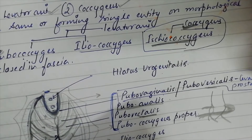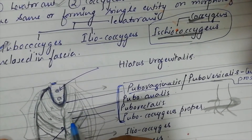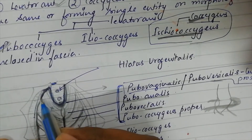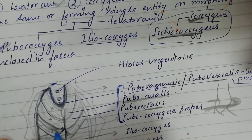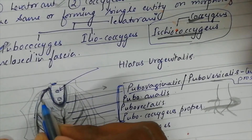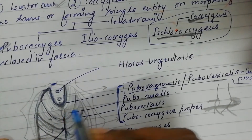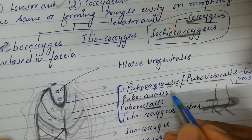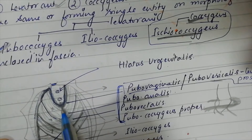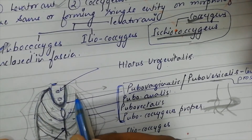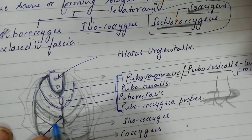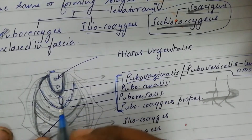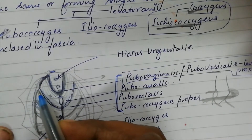The next component is puboanalis. Because the anal canal is below the rectum, puboanalis is situated at a lower level than puborectalis. Puboanalis encircles the anal canal, forming a U-shaped sling.